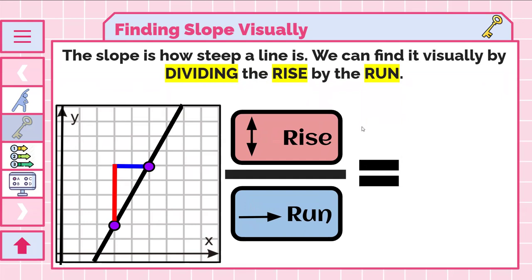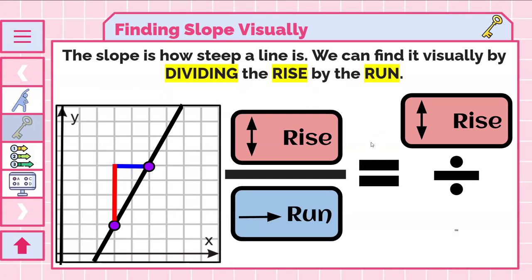This is a fraction. Just like in the warm-up, you can always treat a fraction like division. So you can also think of it as rise divided by run. Sometimes we leave it as just a fraction, but especially if it gives you a nice whole number, we do like to normally divide it.